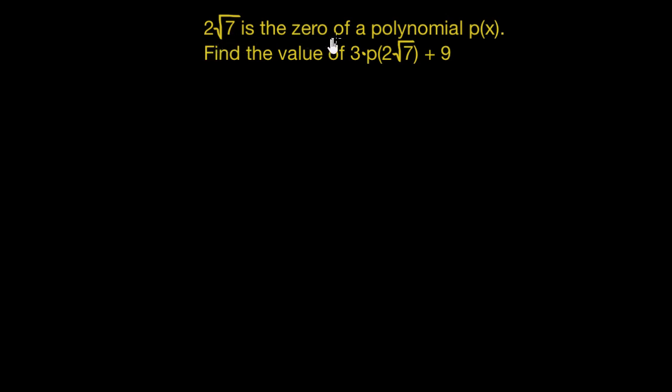2√7 is the zero of a polynomial p(x). Find the value of 3 times p(2√7) plus 9.